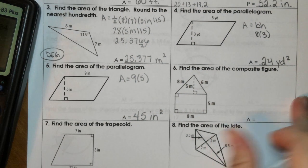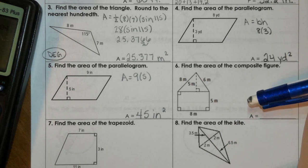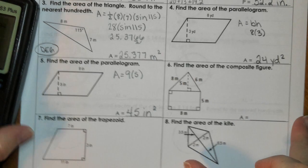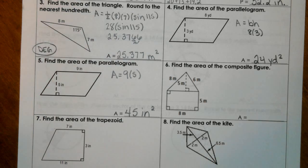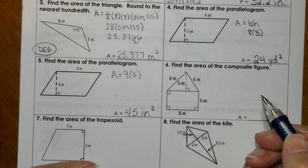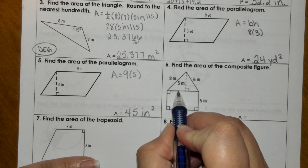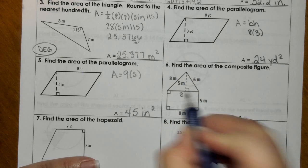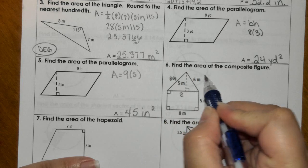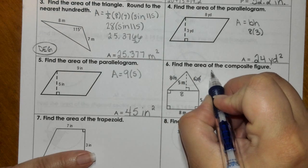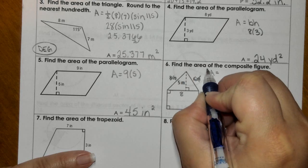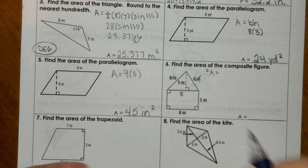For number six, it says find the area of the composite figure. We need to find the area of the rectangle and the triangle. First, the base of the triangle would be 8. This is extra, this is extra.